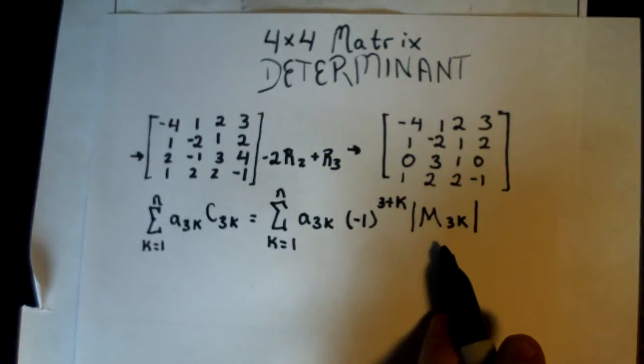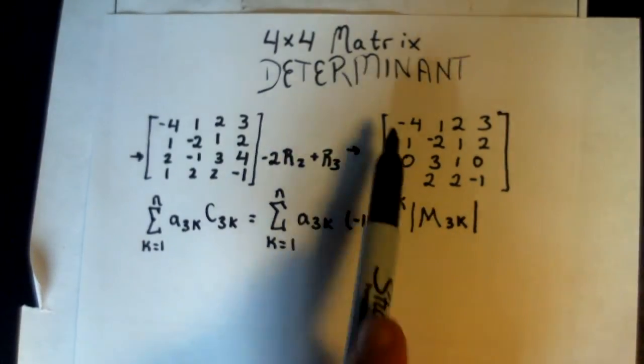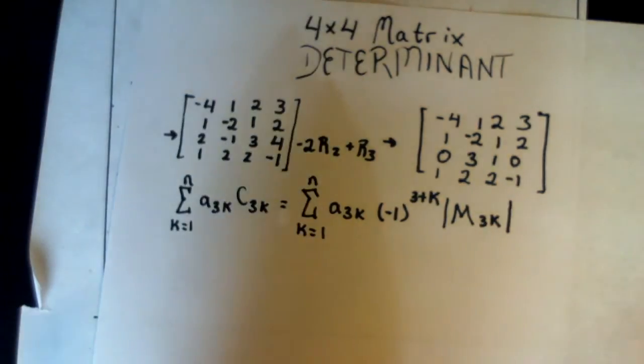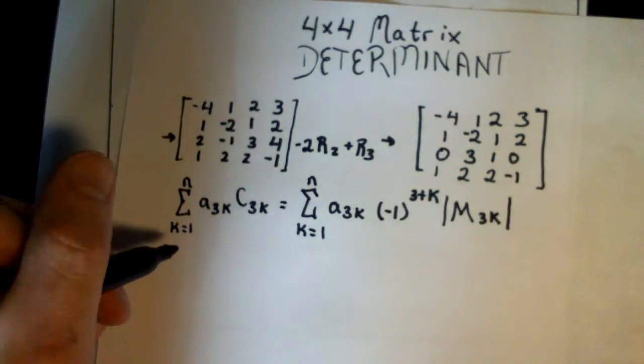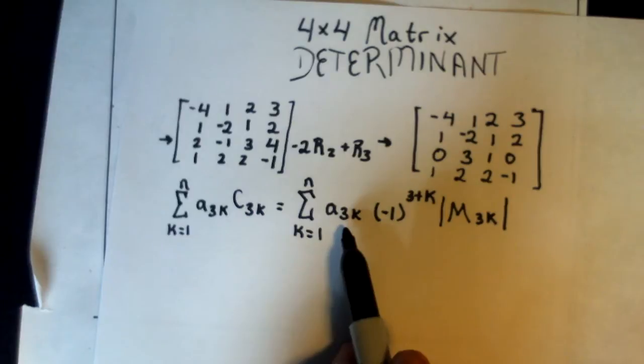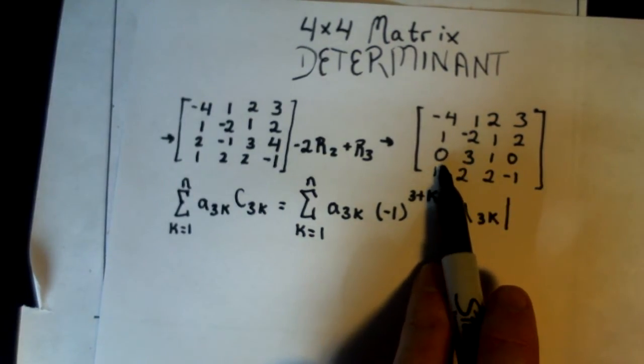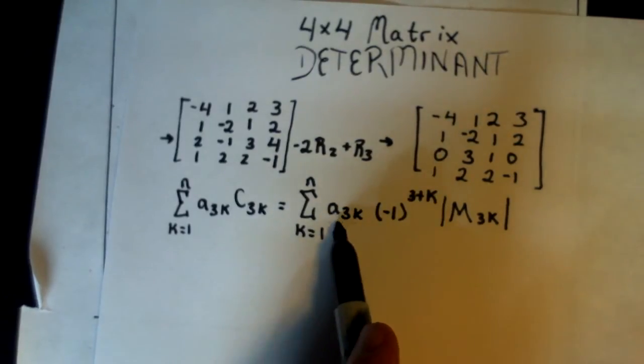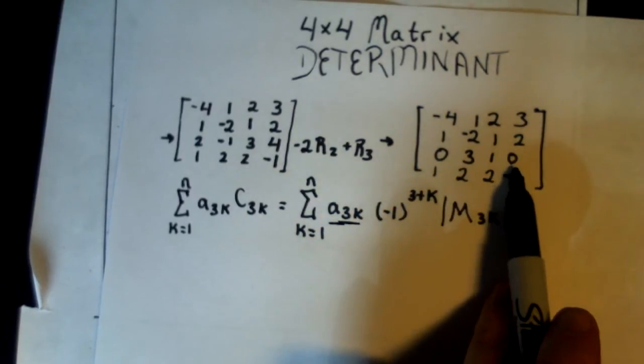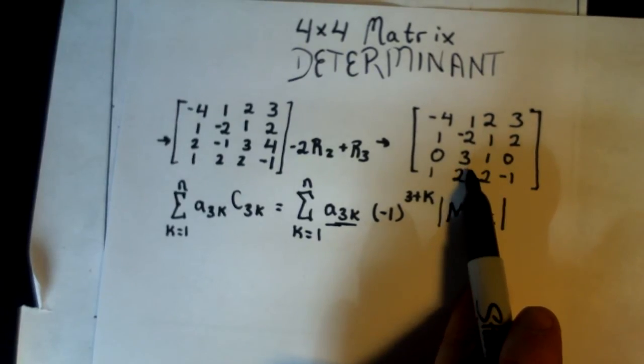And then we're going to find the determinant of the minor at 3k. So this is going to be a 3 by 3 matrix, because we're going to be getting rid of... So now we have the sum of a3k, so in this case, this will always be zero, because we know this is going to be zero, and that's the same case for column 4, because that's a zero. So let's immediately jump to 3.